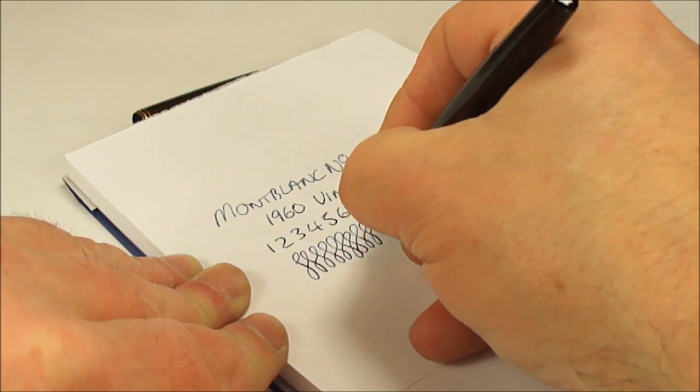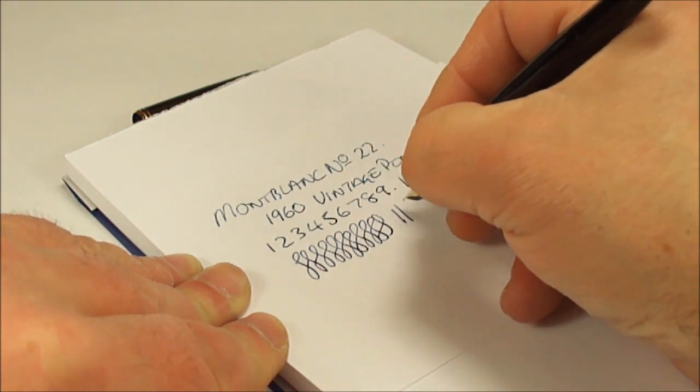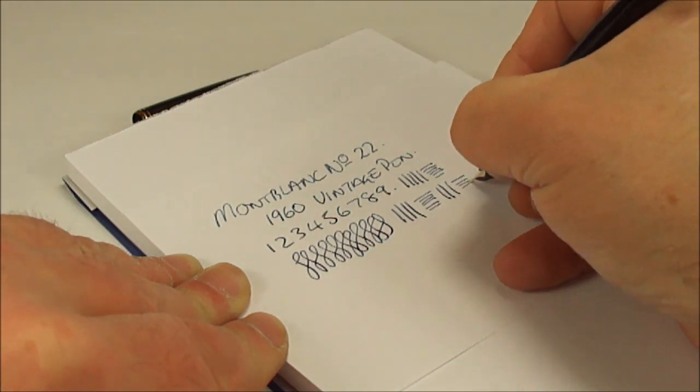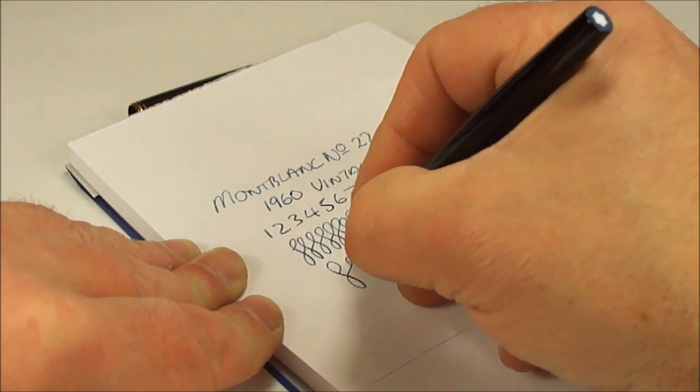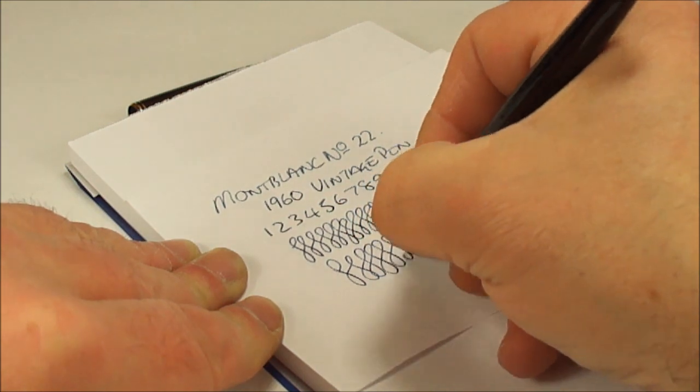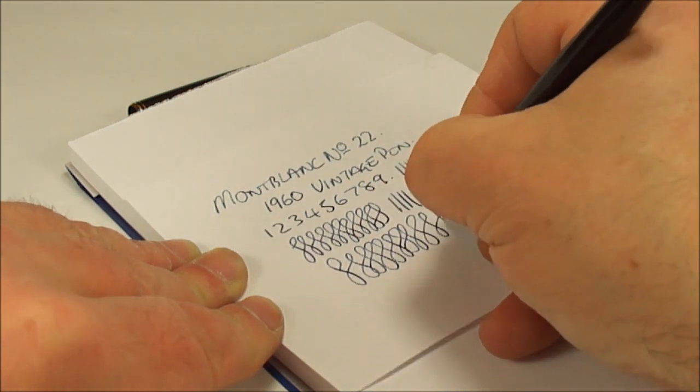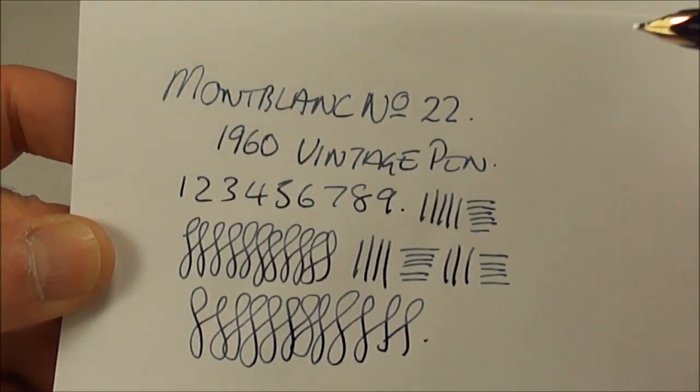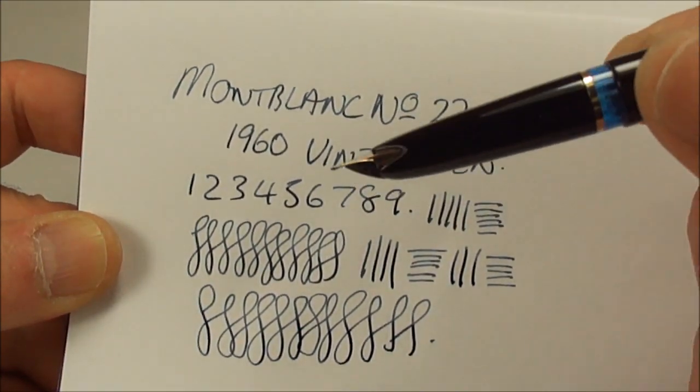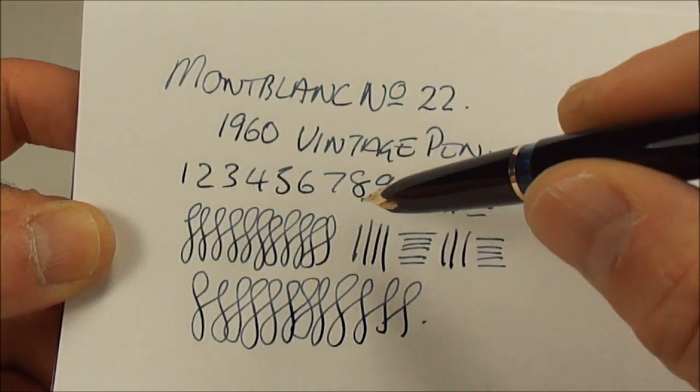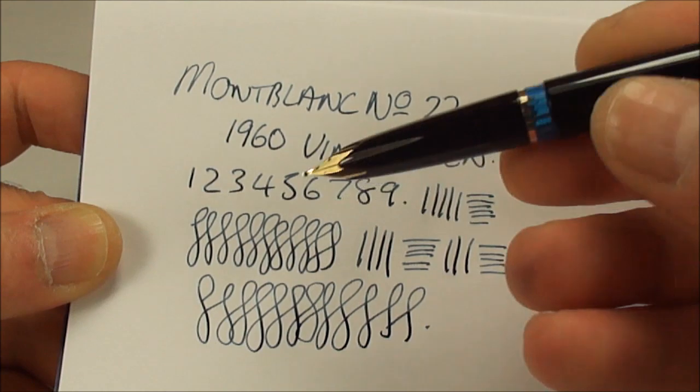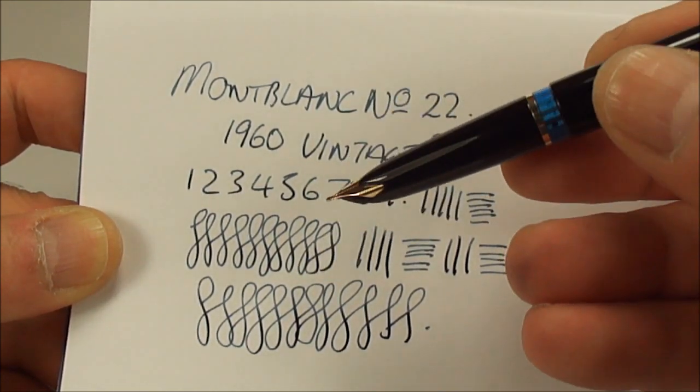And as you can see by the figure of eights, there's no variation in the line. It's quite a stiff nib, but very nice to write with. Nice and smooth. So let's show you the writing sample. As we said, it's writing with a fine line, writing very nicely, lovely and smooth, as you would expect from a pen from Montblanc. Lovely writer.